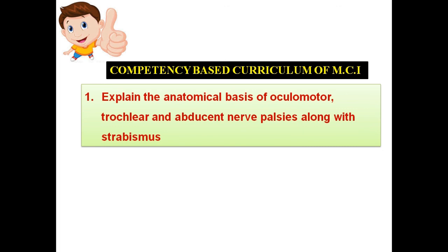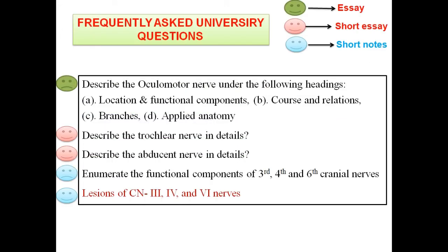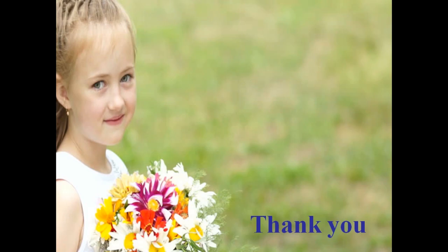Regarding the competency-based curriculum, these questions are related to the annual examination. The oculomotor nerve is commonly asked as an essay question. The trochlear and abducent nerves are asked as short essays. The functional components of all three cranial nerves and their lesions are also very important topics. Thank you very much for watching.